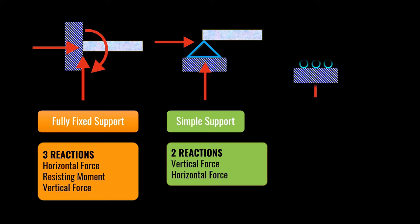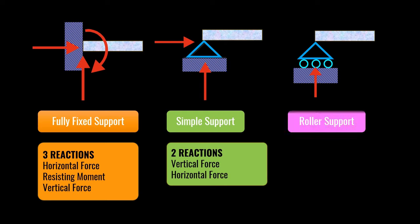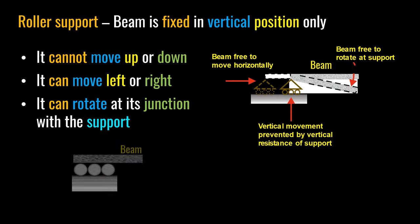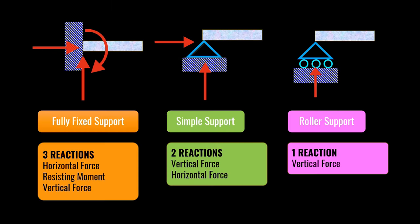A roller support, on the other hand, is like having a ruler on a pen — it cannot move in the vertical direction. However, it can rotate and it can move in the horizontal direction. This means that there is only one reaction, which is a vertical reaction.